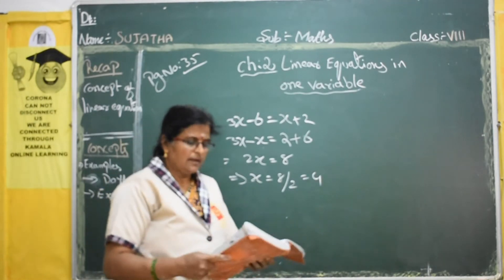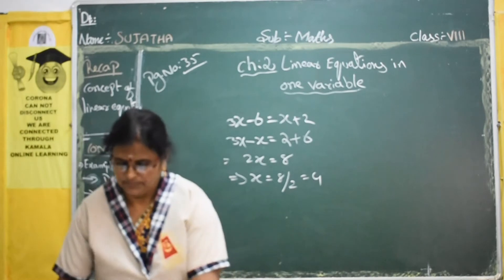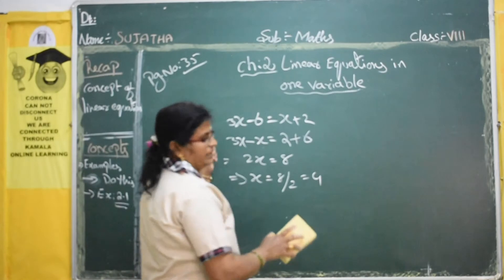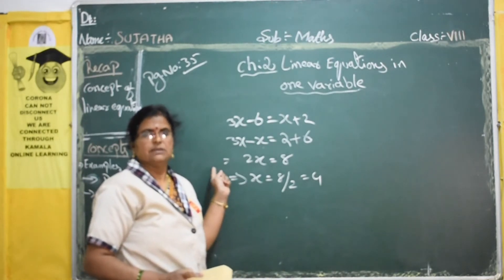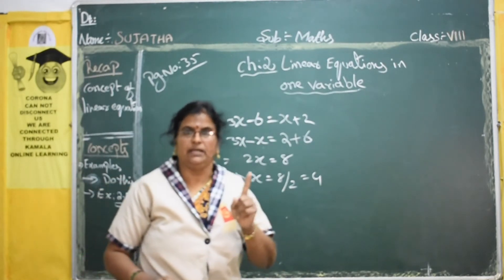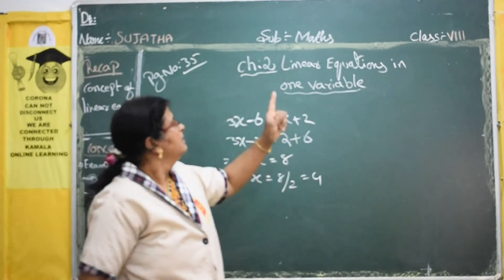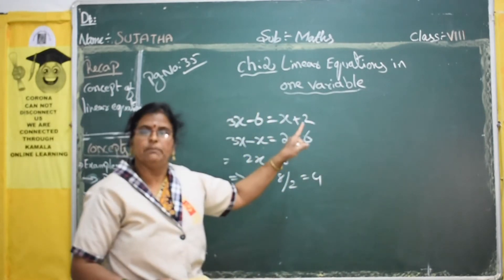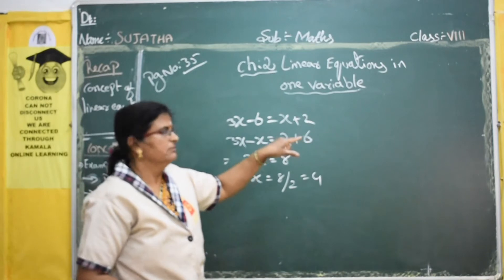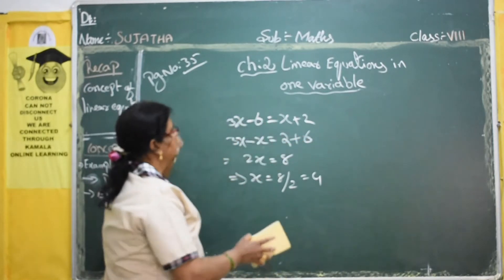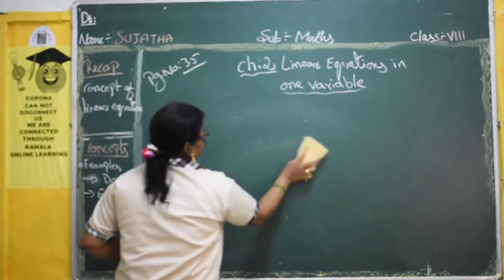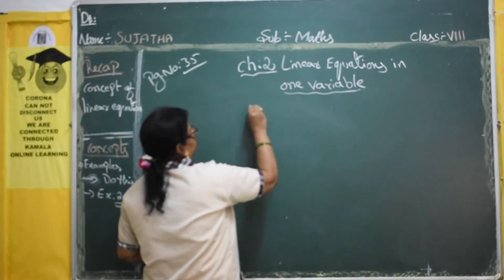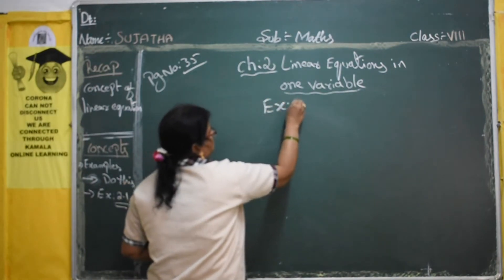Now we will start Exercise 2.1: Solve the following simple equations. A simple equation is nothing but a linear equation in one variable — it must have only one variable and the power must be 1. Open your textbooks to Exercise 2.1.